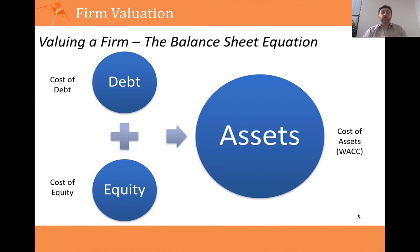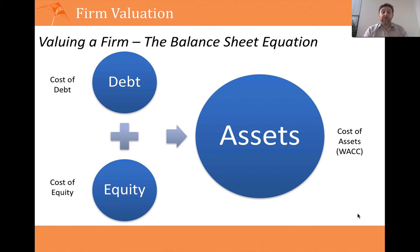We are going to value the assets of the company, so we'll take the cash flows of the company and discount them not by the cost of debt or the cost of equity, but by the cost of the assets — and that is the weighted average cost of capital. I do have other videos on the weighted average cost of capital available on my YouTube finance channel.